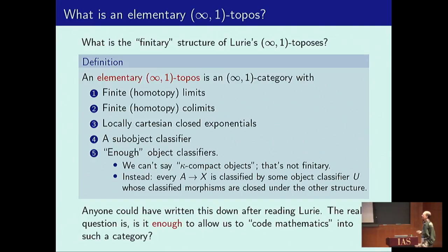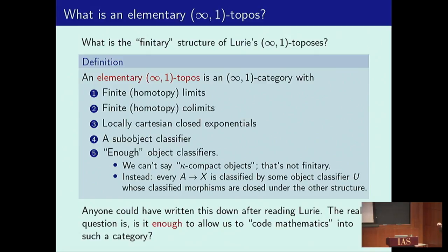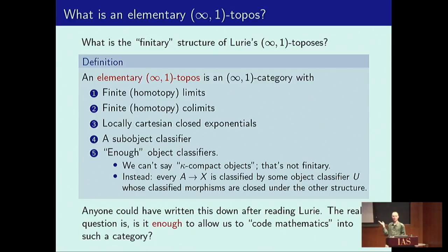In a sense, this is not a radical definition — you sort of just take the infinity-one topos and extract this. There's maybe a little bit of room to debate exactly what you mean by 'enough object classifiers.' The real question is whether this definition is good enough to let us encode mathematics. The whole point of the elementary one-topos axioms was that they're just like the category of sets, and so we can do mathematics inside an elementary topos. So the question is, is this good enough to do the kind of homotopical higher-categorical mathematics inside an elementary infinity-one topos?